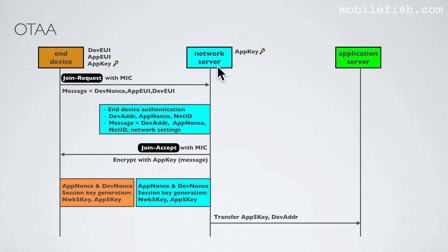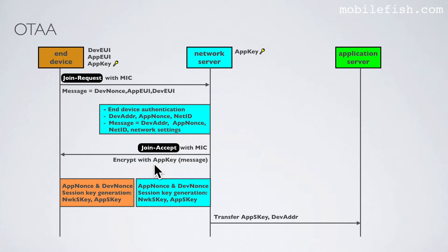The network server constructs a message containing the device address, AppNonce, network ID, and some network settings. These network settings include download settings — data rates to be used for receiving — the receive delay, which is the time between transmit and receive, and the channel frequency list, which are frequency settings for each channel. Over this message, the message integrity code is generated by the AppKey.